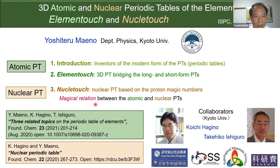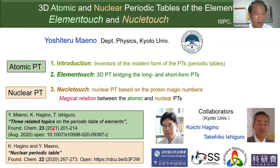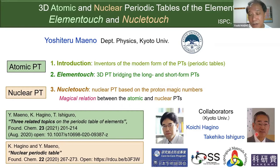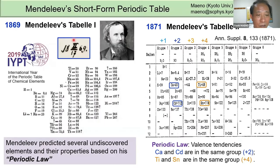I'll tell you about the magical relation between the atomic and nuclear periodic tables. The work is published in two papers in Foundations of Chemistry last year, and two more papers just recently came out. My collaborators are Kouichi Hagino, a nuclear theorist in our department, and Takehiko Ishiguro, an experimental superconductor physicist.